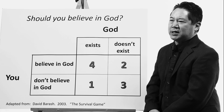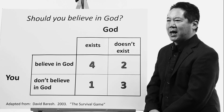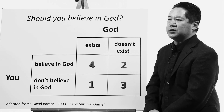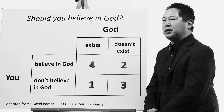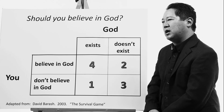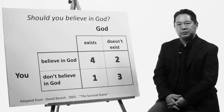Game theory is a branch of mathematics which gives insight into how animals, including humans, should choose to behave. Let's look at an example initially posed by the philosopher and mathematician Blaise Pascal. Pascal asks the question: